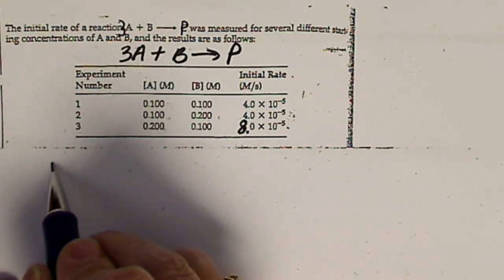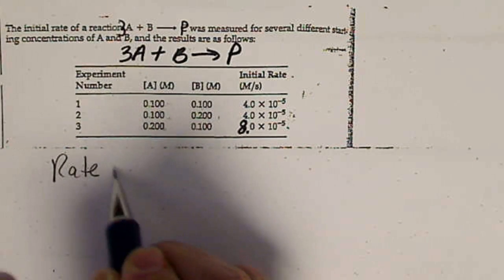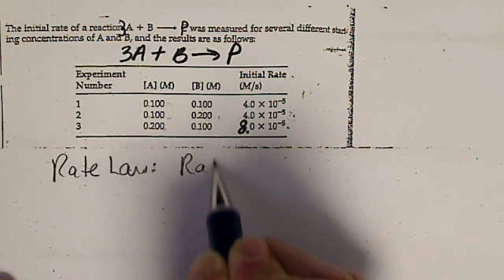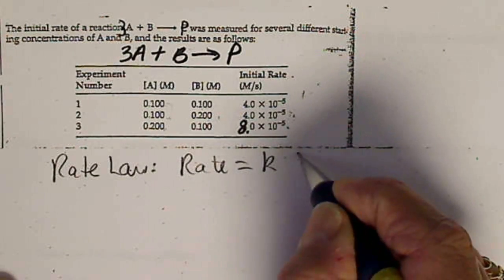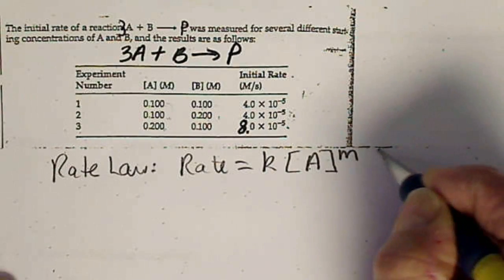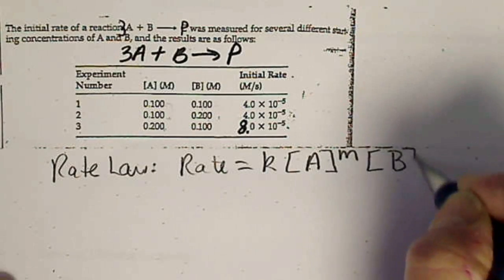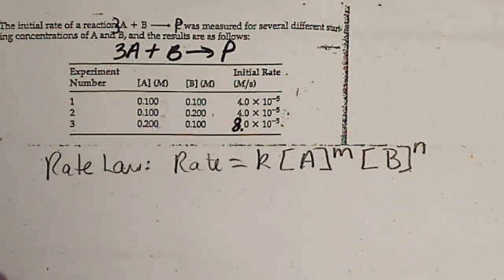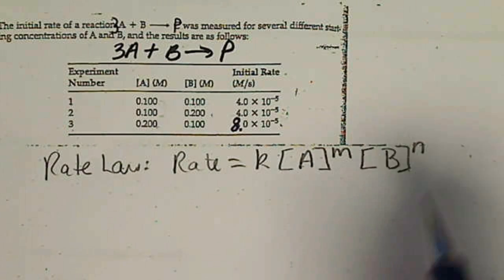And since these numbers are easy, what we're going to be looking at, all rate laws are going to look like this. Rate equals the rate constant K times one reactant raised to a power times the other reactant raised to a power.